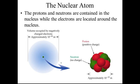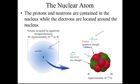We're going to look at a lot of different models, and this is what we're eventually going to come down to — a fuzzy electron cloud where the electrons zip around, and a tight, densely packed, positively charged nucleus. Notice that the nucleus is positively charged, and neutrons have no charge, so the overall charge of the nucleus is positive. The overall charge of the electron cloud is negative.